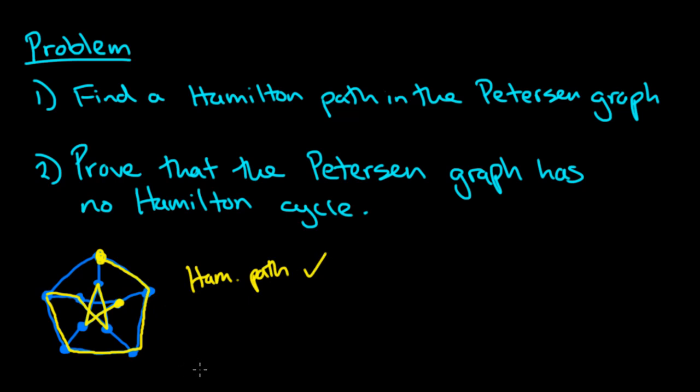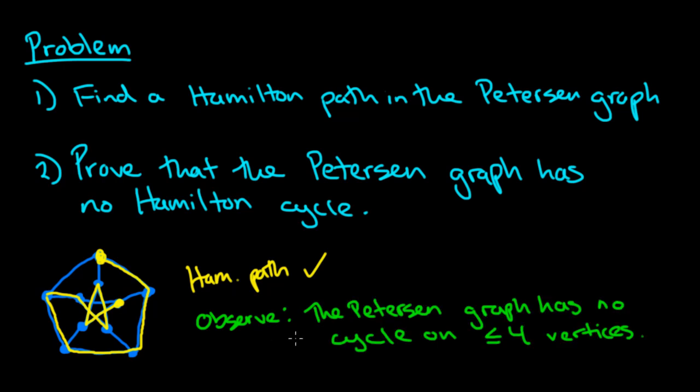So that part is easy enough. Now in order to prove that the Petersen graph has no Hamilton cycle, we'll take a clever argument to do this. And the first thing is to observe that